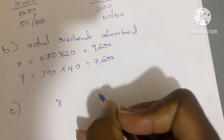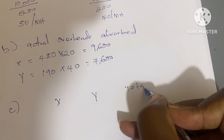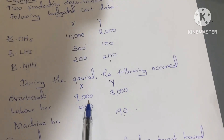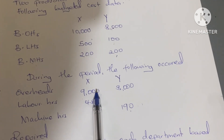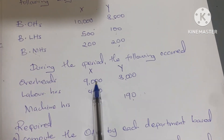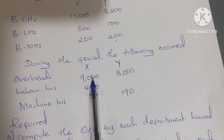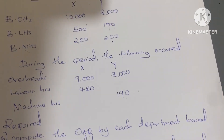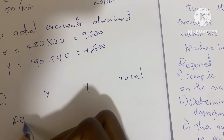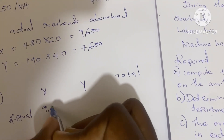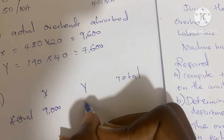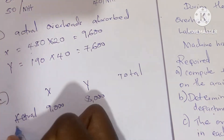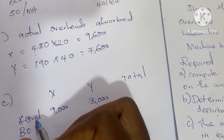For X and Y and the total, we compare actual overheads incurred against actual overheads absorbed. For X, the actual overheads incurred were 9,000.